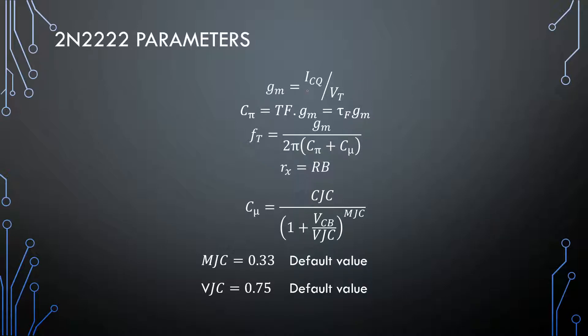We have some equations to calculate our Cπ and our Cμ. But, we will mainly focus on this top half. To get our Cπ, we need to calculate our transconductance. And, if we multiply the forward transition time with our transconductance, we will get our Cπ value. And then we can use our transition frequency and get out our Cμ value. And our base materials is just equals to Rb. This is the easy way.